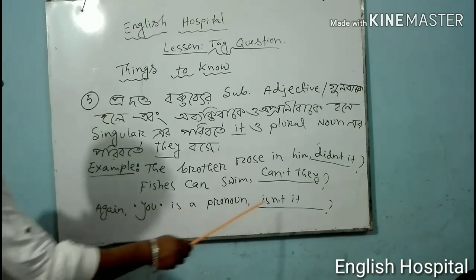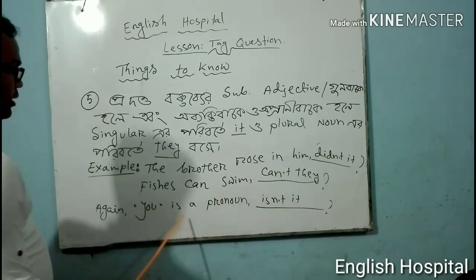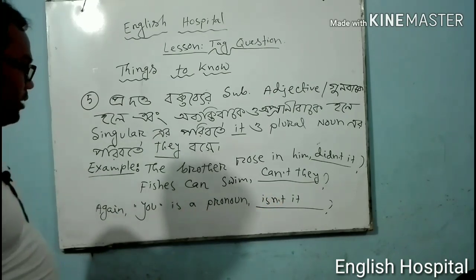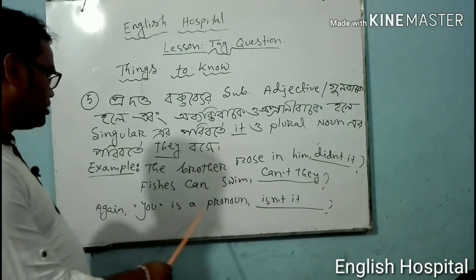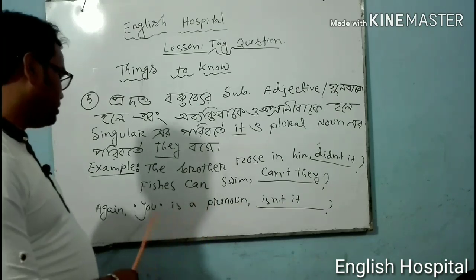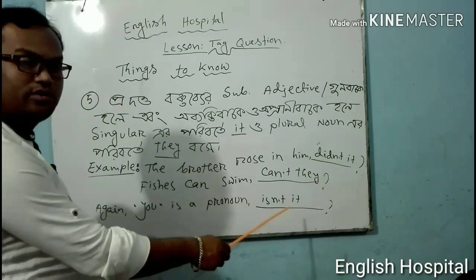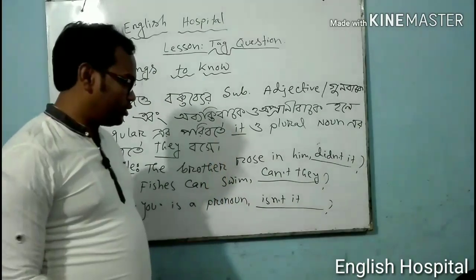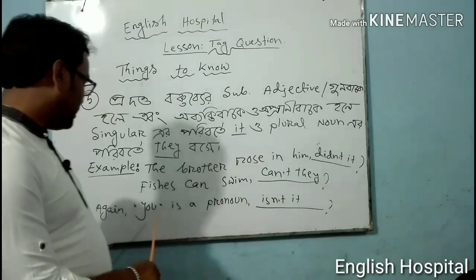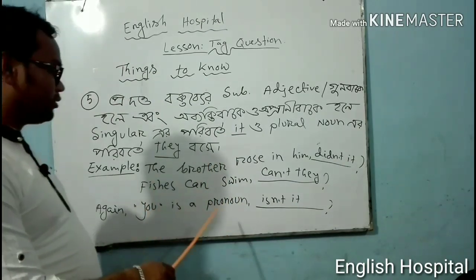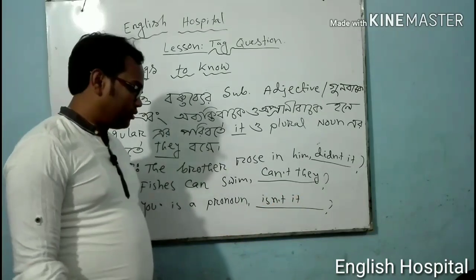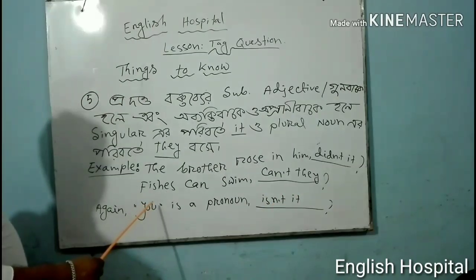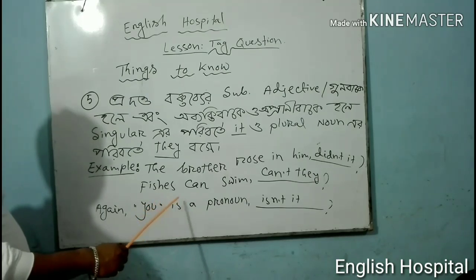If the subject is 'I' and the verb is 'am,' then the tag question is 'isn't it.' So you can write 'isn't it' as the tag for 'I am' statements.